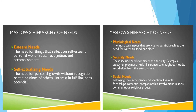Maslow's hierarchy of needs. We have esteem needs — the needs for things that reflect self-instinct, personal worth, social recognition, and accomplishment. Self-actualizing needs — the need for personal growth without recognition or the opinions of others; the primary interest is fulfilling one's potential. Physiological needs — the most basic needs vital to survival, such as water, air, food, and sleep. Security needs — the needs for safety and security, including steady employment, health insurance, safe neighborhoods, and shelter from the environment.